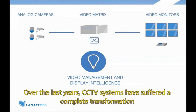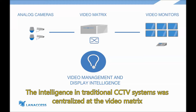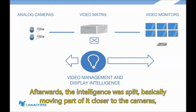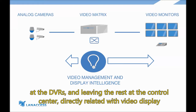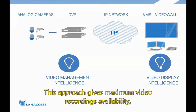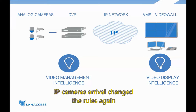Over the last years, CCTV systems have suffered a complete transformation. The intelligence in traditional CCTV systems was centralized at the video matrix. Afterwards, the intelligence was split, basically moving part of it closer to the cameras at the DVRs and leaving the rest at the control center directly related with video display. This approach gives maximum video recordings availability that does not depend on the IP network availability. IP cameras arrival changed the rules again.